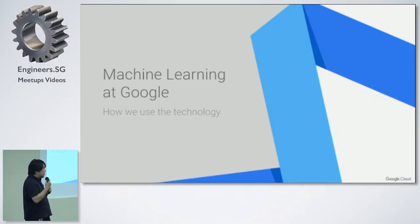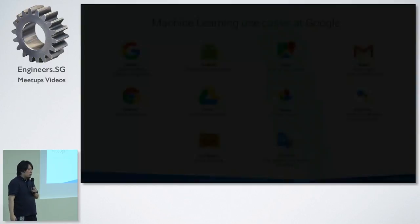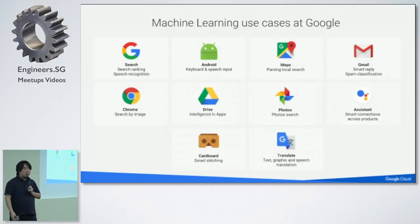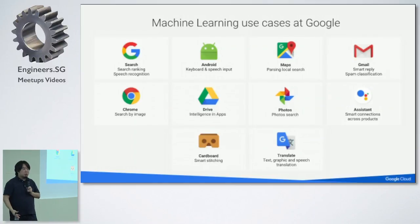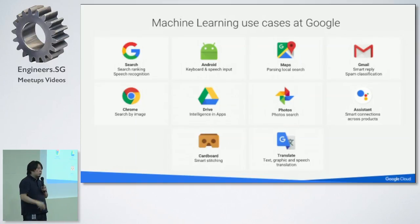Google has been using this technology in over 100 different production services, including Google Search, Android, Maps, and Gmail. If you use Google Search every day, you are using deep learning technologies every day. We introduced RankBrain, a deep learning model for defining the ranking of search results, in 2015.